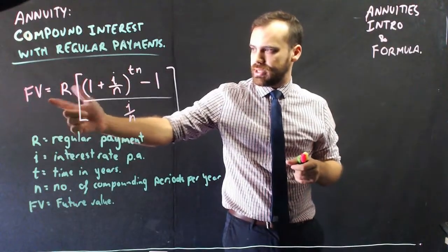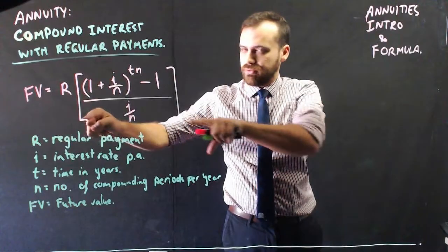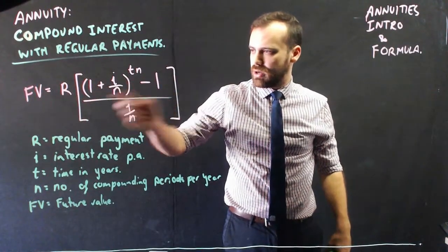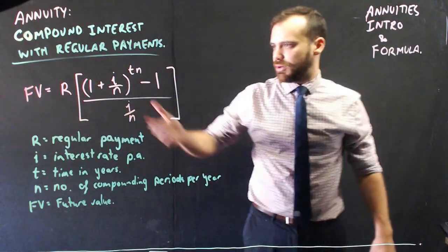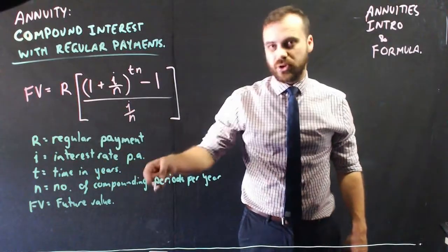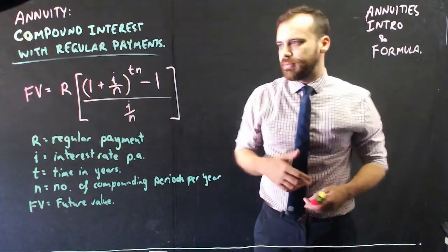The future value FV is equal to regular payments R times all of this: 1 plus i over n, to the power tn, minus 1, over i divided by n. i is the interest rate per annum, t is the time in years, n is the number of compounding periods per year, and FV is future value.